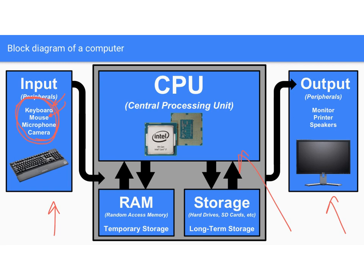Once input is received, inside the computer there are three main places where work happens. There's the CPU, the central processing unit — the part of the computer that's basically doing the math. It's running calculations, transforming that data, taking input, running computer programs. When calculations are performed, sometimes the data goes to RAM for temporary storage, sometimes it goes to a hard drive for long-term storage.